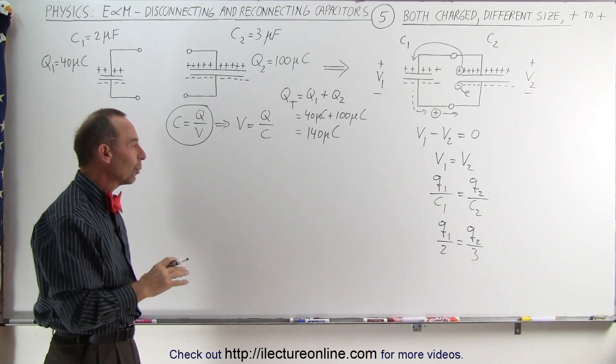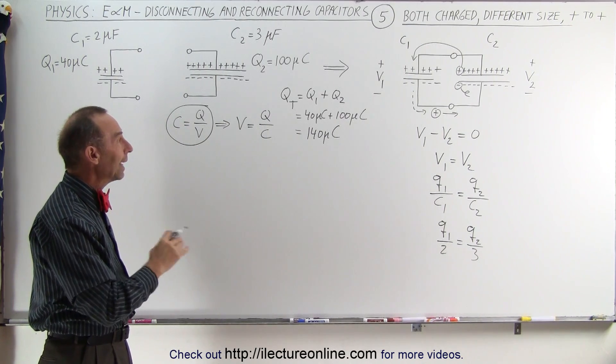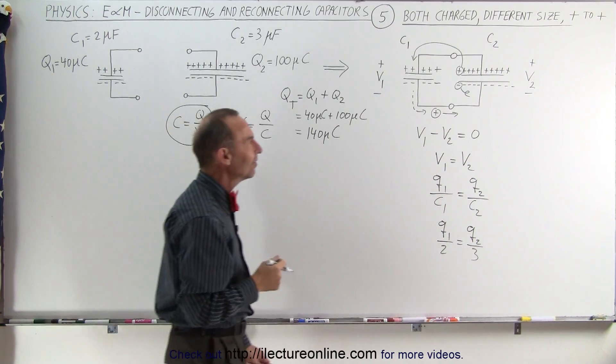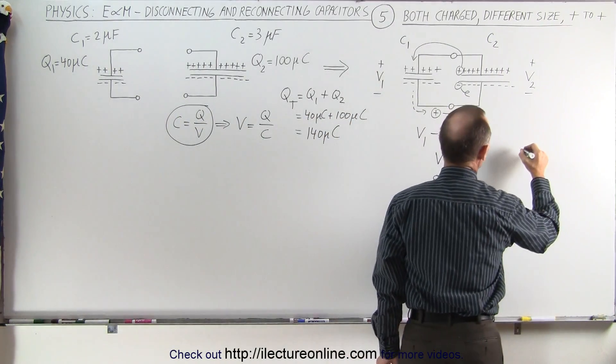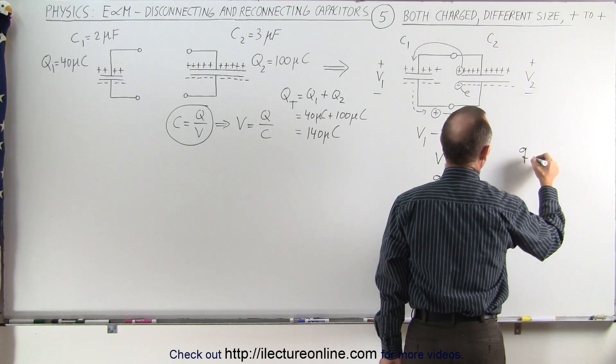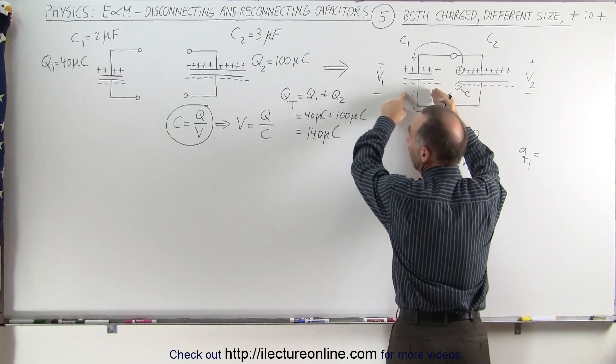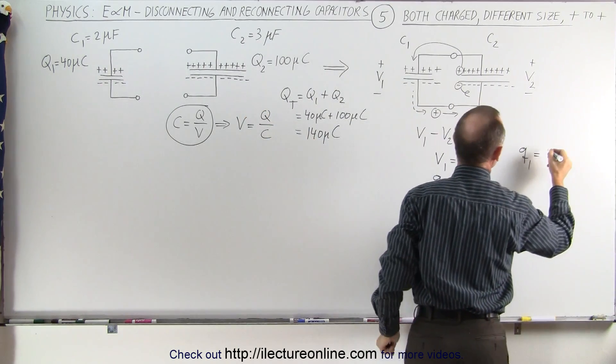Now we also need to figure out the relationship between q1 and q2. How do we do that? Well, what we can say is that q1 is going to be equal to the charge it started with, it started with big Q1.